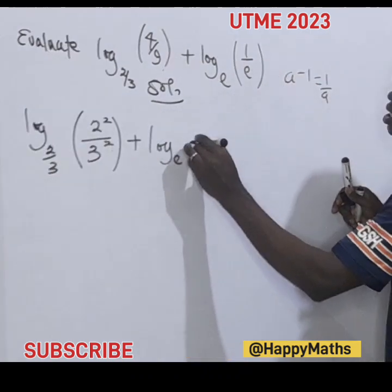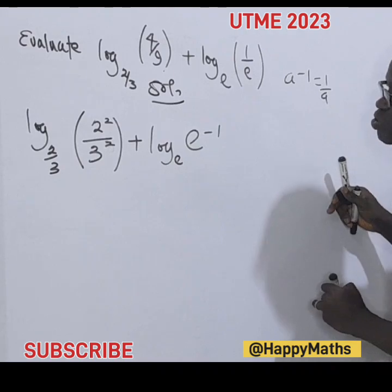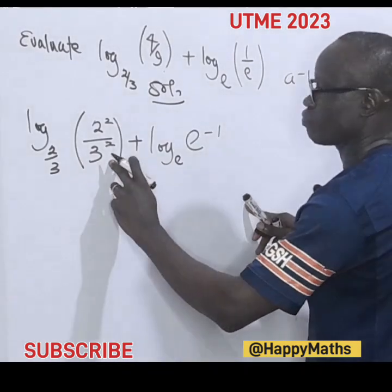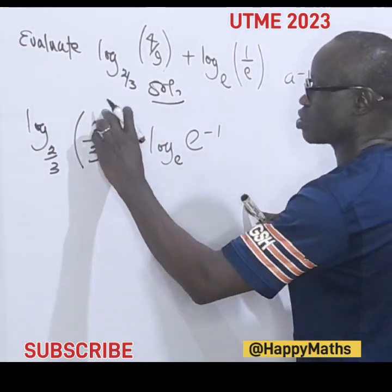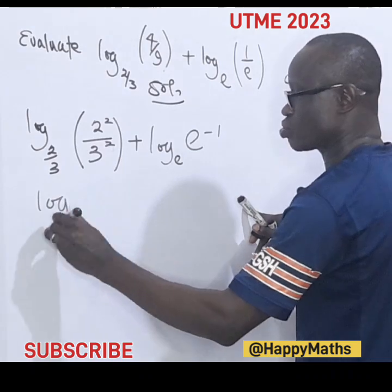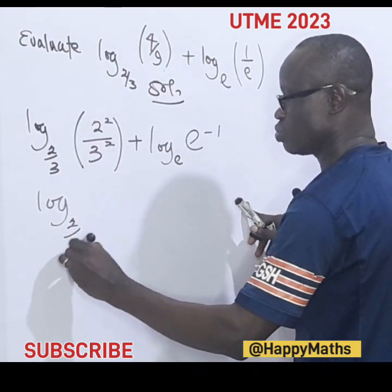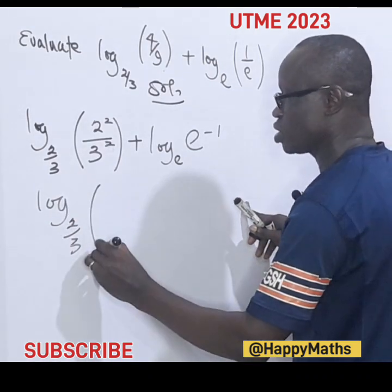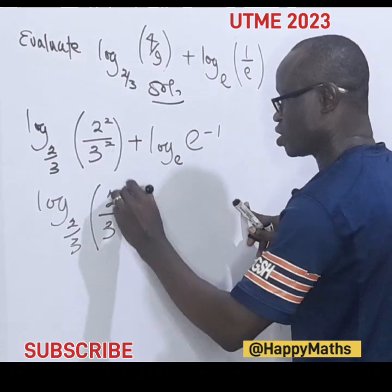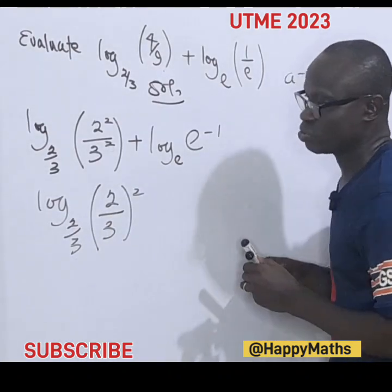So we can write this as e raised to the power of minus one. From here, we have it as two to the base of three, then two over three raised to the power of two.